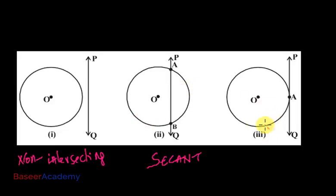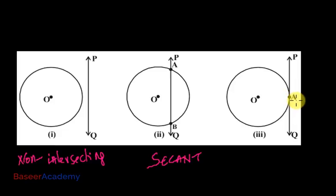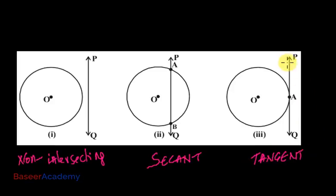Now let us consider the third picture. The line PQ and the circle have only one common point A — then this line PQ is known as a tangent. When the line PQ intersects the circle at only one point, then it becomes a tangent — as simple as that.